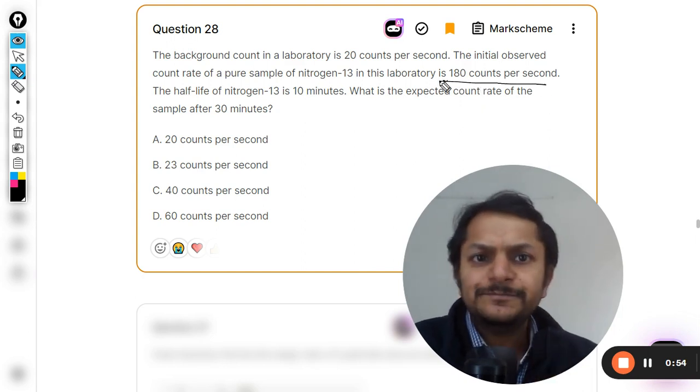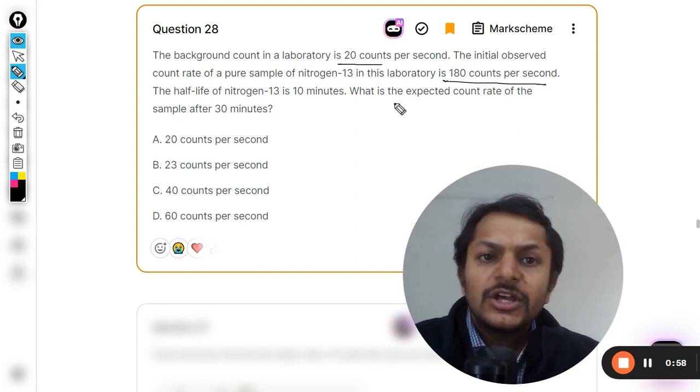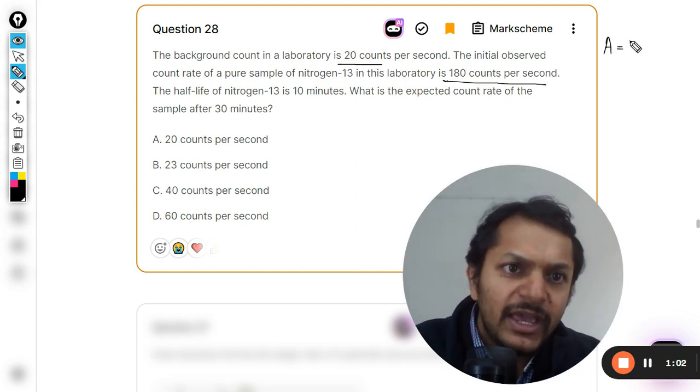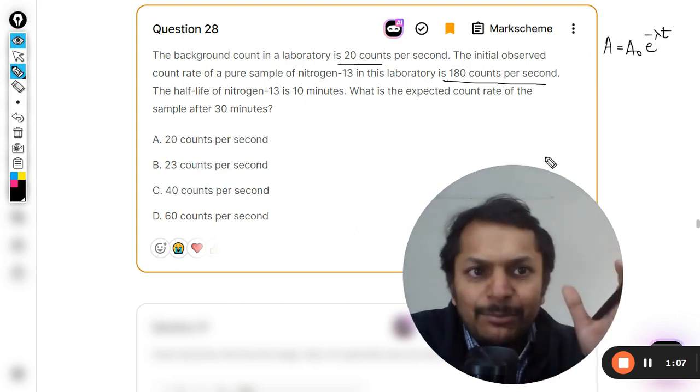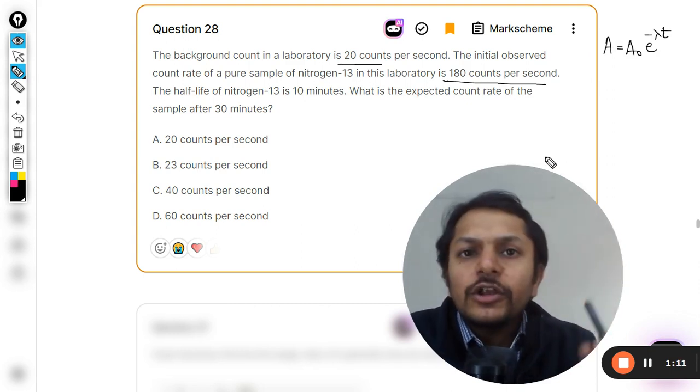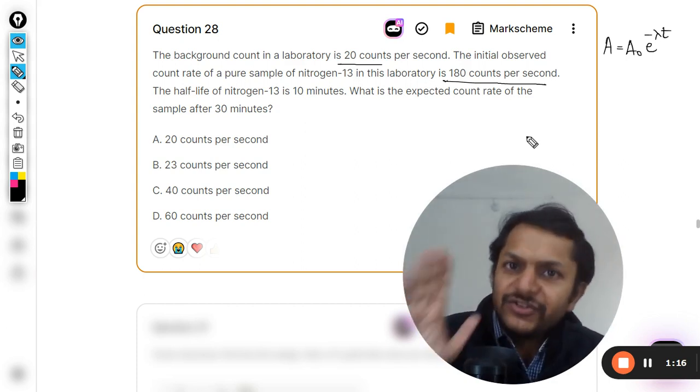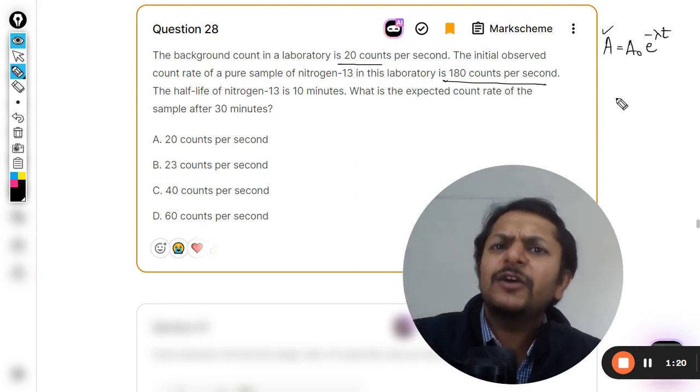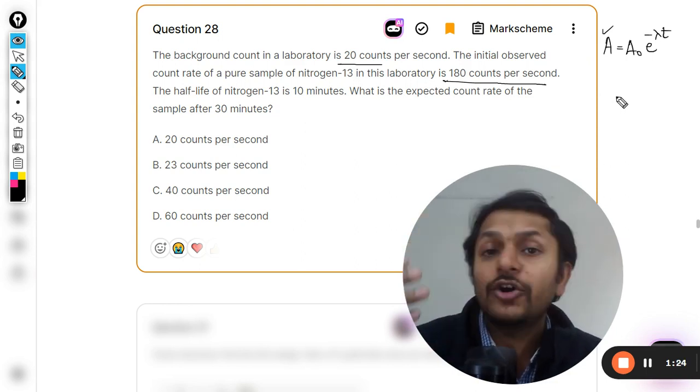180 counts per second - you have to subtract 20 out of it first. Count rate means the activity, so A = A₀e^(-λt) is valid on the sample. The activity of the sample is actually following the exponential behavior. Your device, the measuring device, should measure this activity.